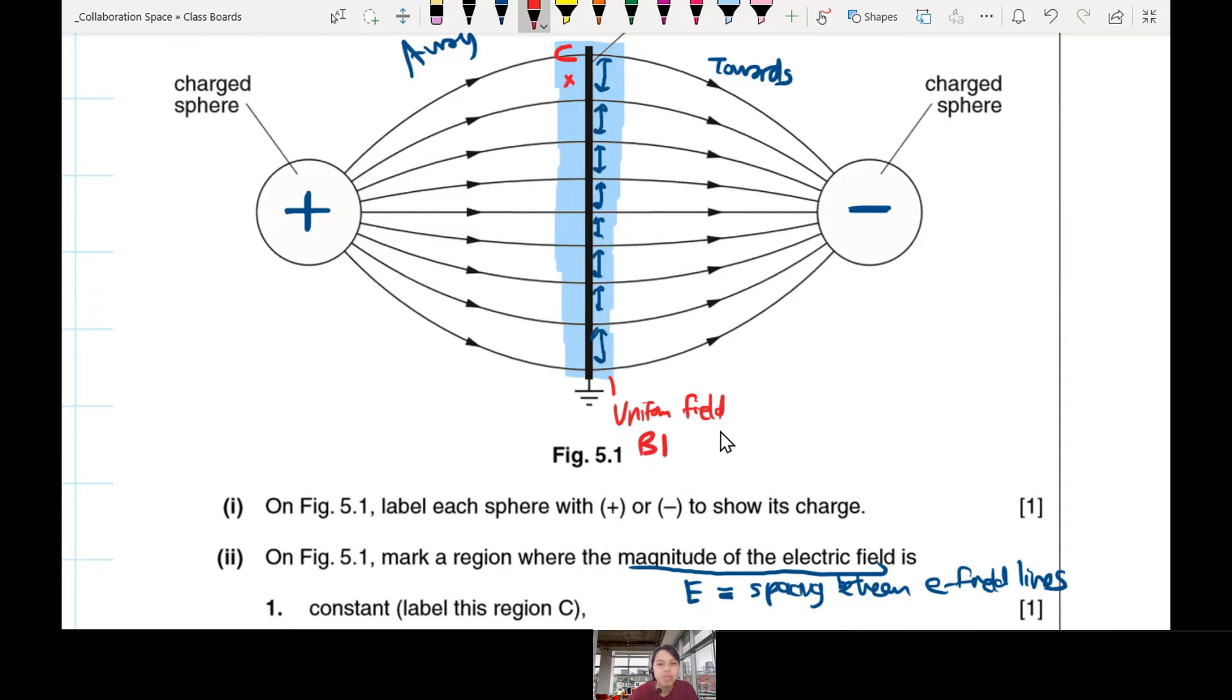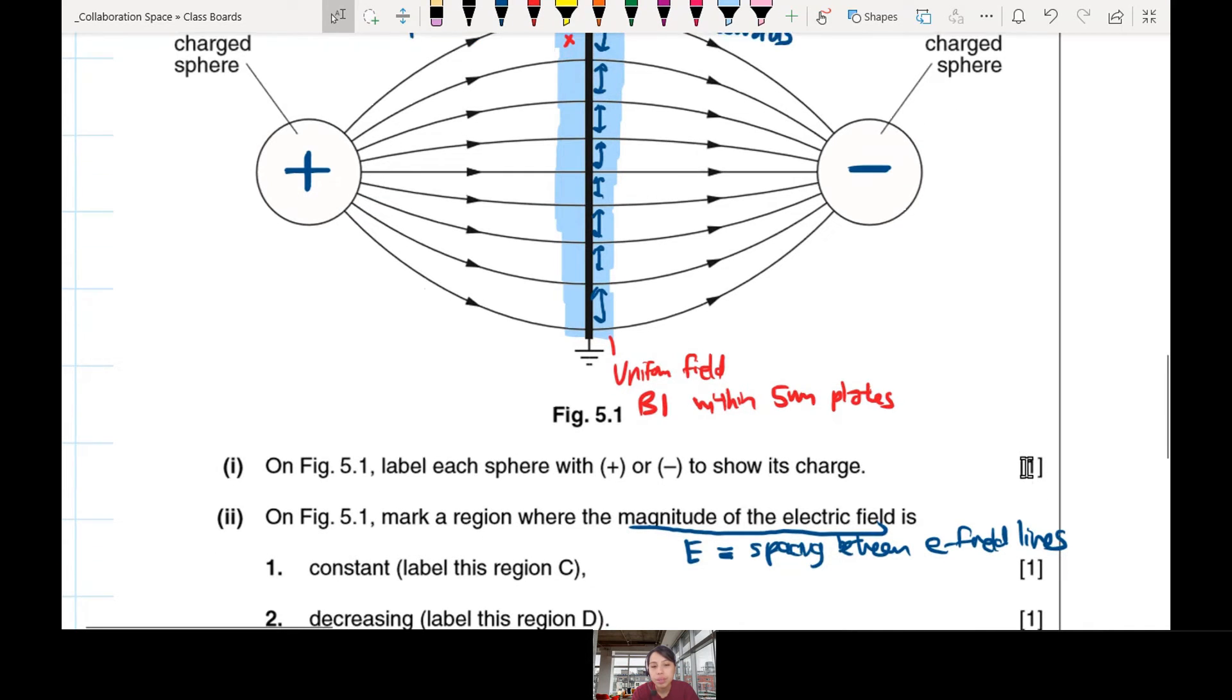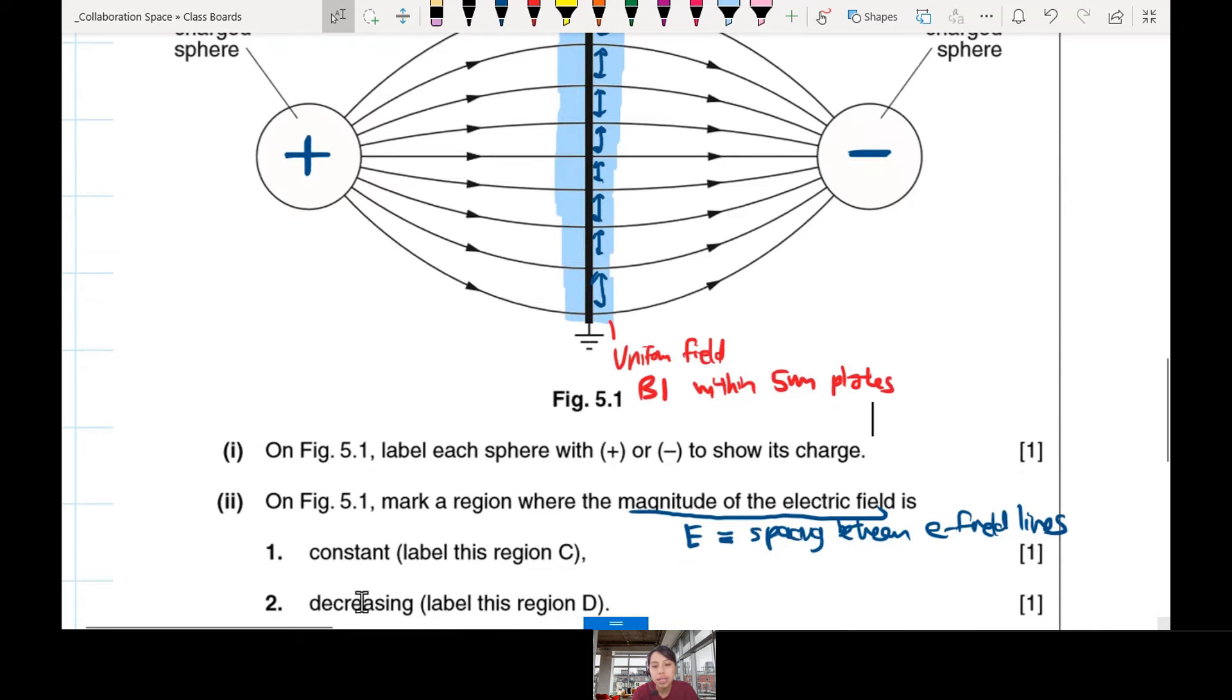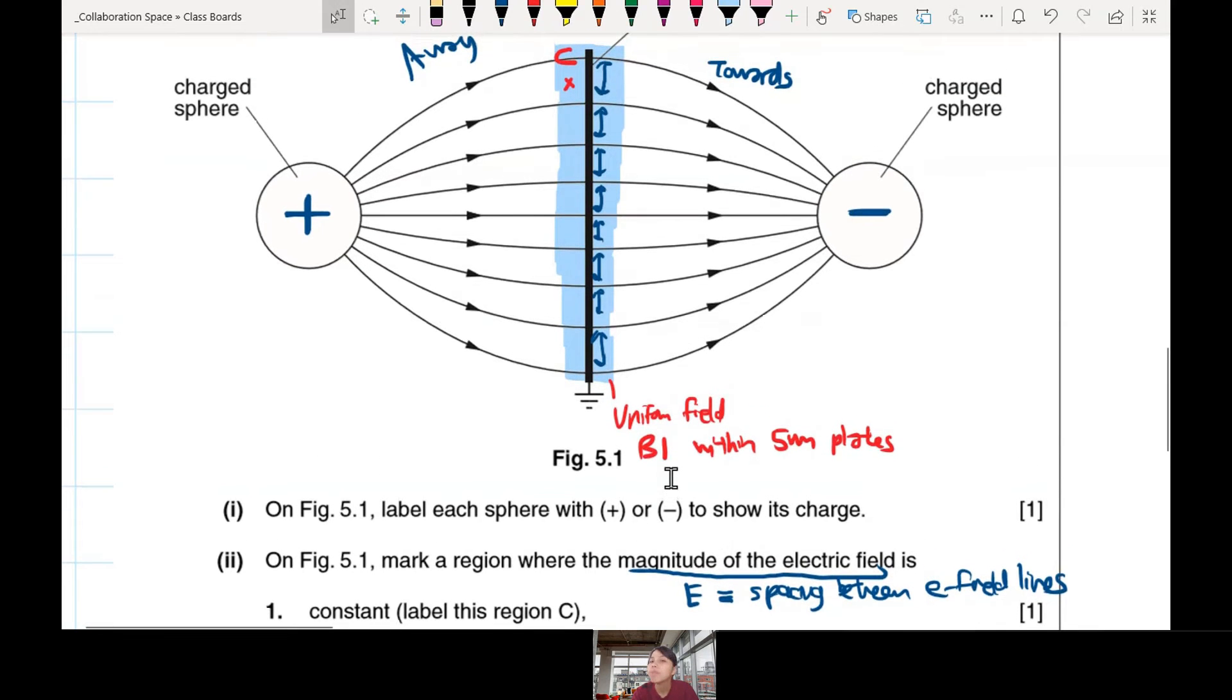This one is uniform, so you mark your C region. C can be anywhere inside this point. You can also shade area also can. So this is where you have uniform field. The mark scheme is kind of picky, they say must be within 5mm from plate, so you draw as close as you can to the plate. You draw near the plate can already. Then they also want you to find where is the electric field decreasing, means getting weaker.